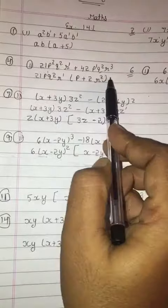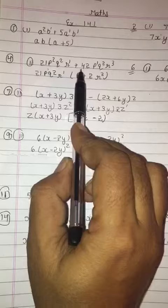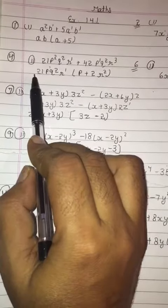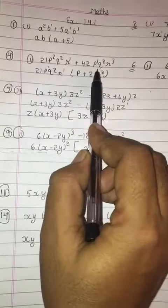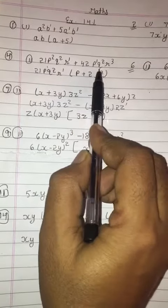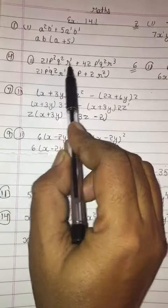Now see question number 4. This statement is given, so we can see that 21 and 42 both are divided by 21, so I took 21 out. Now again, p squared - p's power 1 is there, so p's power 1 we can keep out. Then q squared and q squared both are same, so q squared will come out. R power 1 and r power 3 - r power 1 will come out.